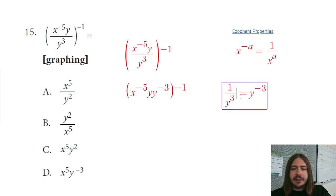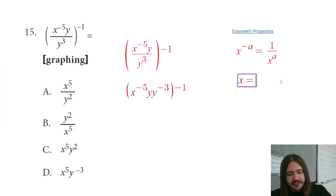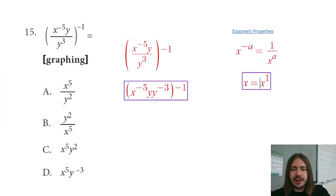Now another thing that I might want to point out here, this is another exponent property, is that anytime you have just a regular old variable here, that's the same thing as saying that variable to the first power. So if you don't see an exponent written, there's sort of an assumed one there.